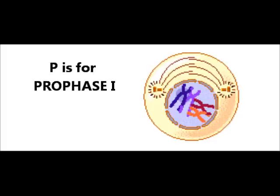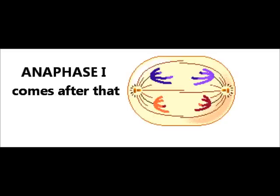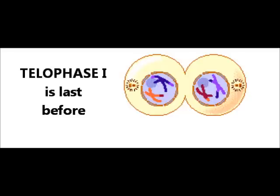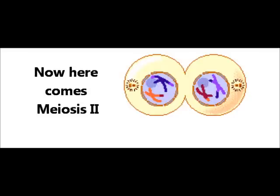P is for prophase one, M is for metaphase one, anaphase one comes after that. Telophase one is last before it does it all again. Now here comes meiosis two.